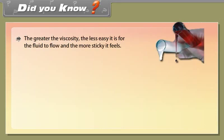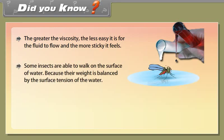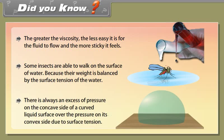Did you know? The greater the viscosity, the less easy it is for the fluid to flow and the more sticky it feels. Some insects are able to walk on the surface of water because their weight is balanced by the surface tension of the water. There is always an excess of pressure on the concave side of a curved liquid surface over the pressure on its convex side, due to surface tension.